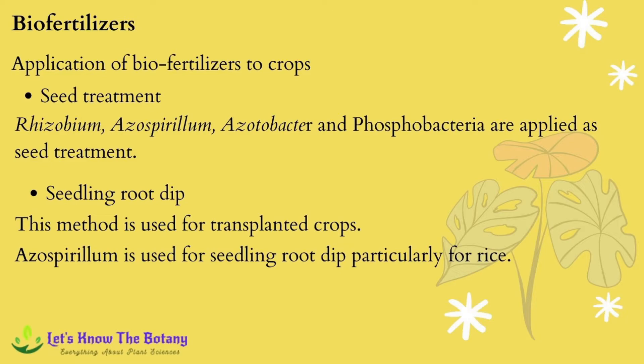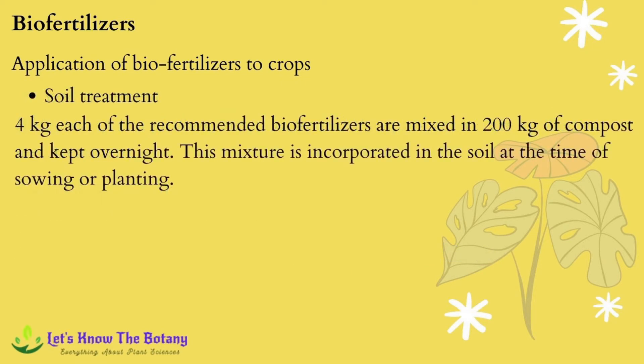Another application method is seedling root dipping, used for transplanted crops. Five packets of one kilogram of inoculant are required for one hectare, mixed with 40 liters of water. The root portion of the seedlings is dipped in the solution for five to ten minutes and then transplanted. Azospirillum is particularly used for seedling root dipping for rice crops.